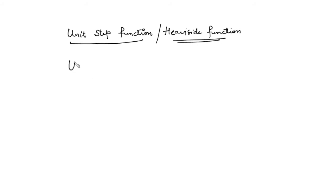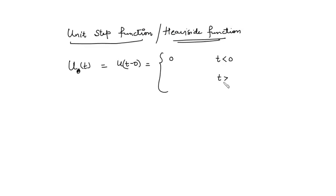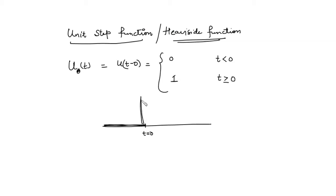This function is represented by u(0) or u(t-0), and these mean the same thing: before t=0 the value of the function is 0, and after t=0 the value of the function is 1. There is a discontinuity which occurs at t=0, making this function piecewise continuous.